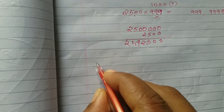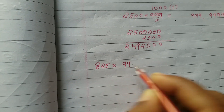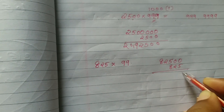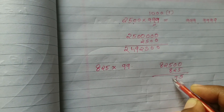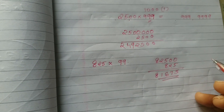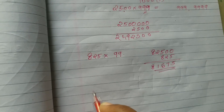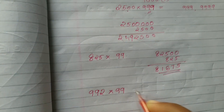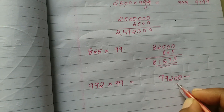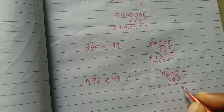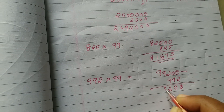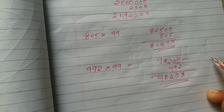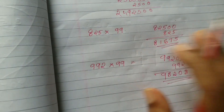We will get a question from 825 × 99. We will get a question from 100 to 1000, from 825, and the answer 81675. We will get a question from 900 and 92 × 99.